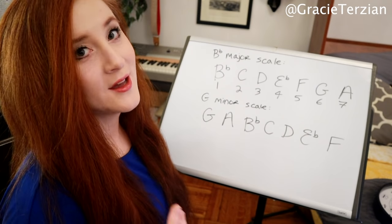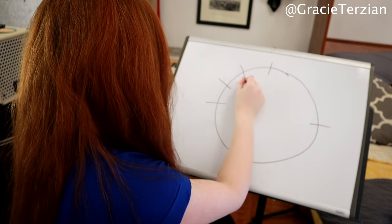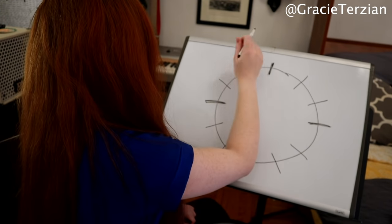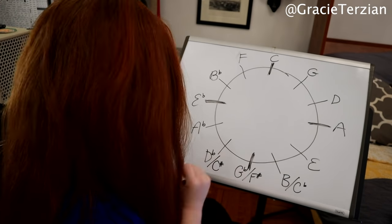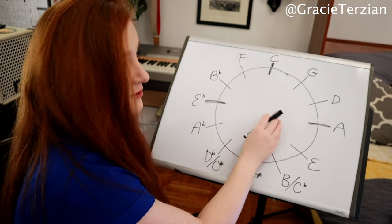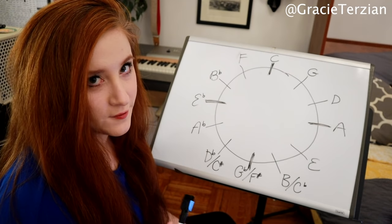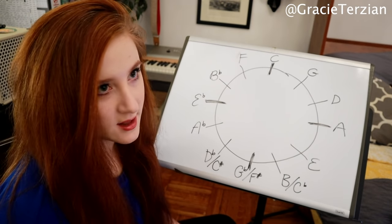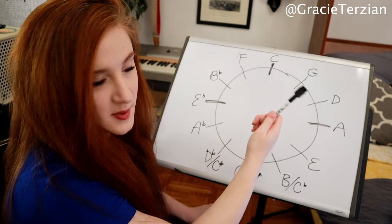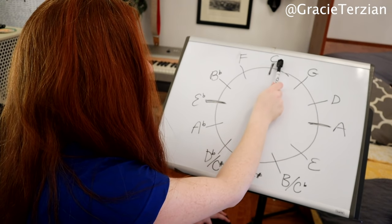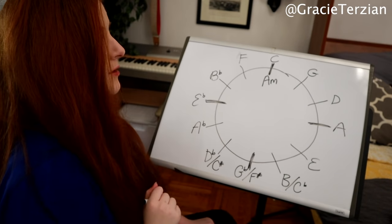Now I'm going to show you one other way to figure out your relative minor key using the circle of fifths. You'll often see the circle of fifths with the relative minor keys written on the inside. We can figure out the minor key by moving three spaces around the circle. The relative minor key of C major is — one, two, three — A minor. So we can write A minor on the inside right underneath C.